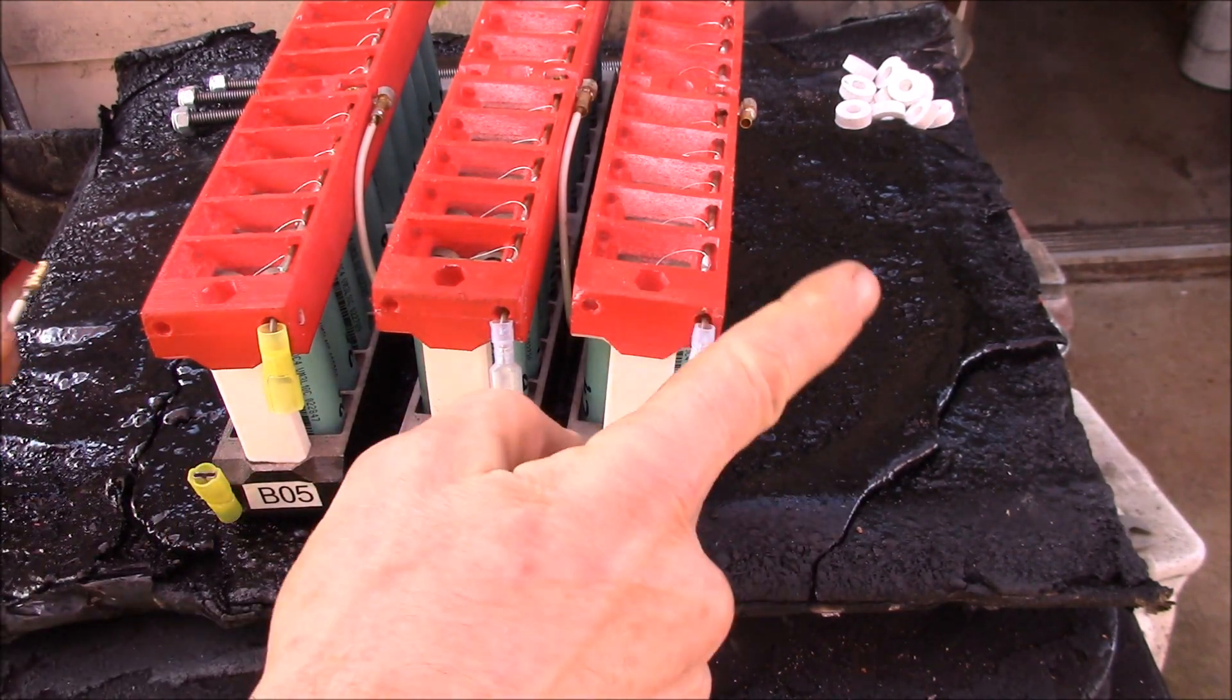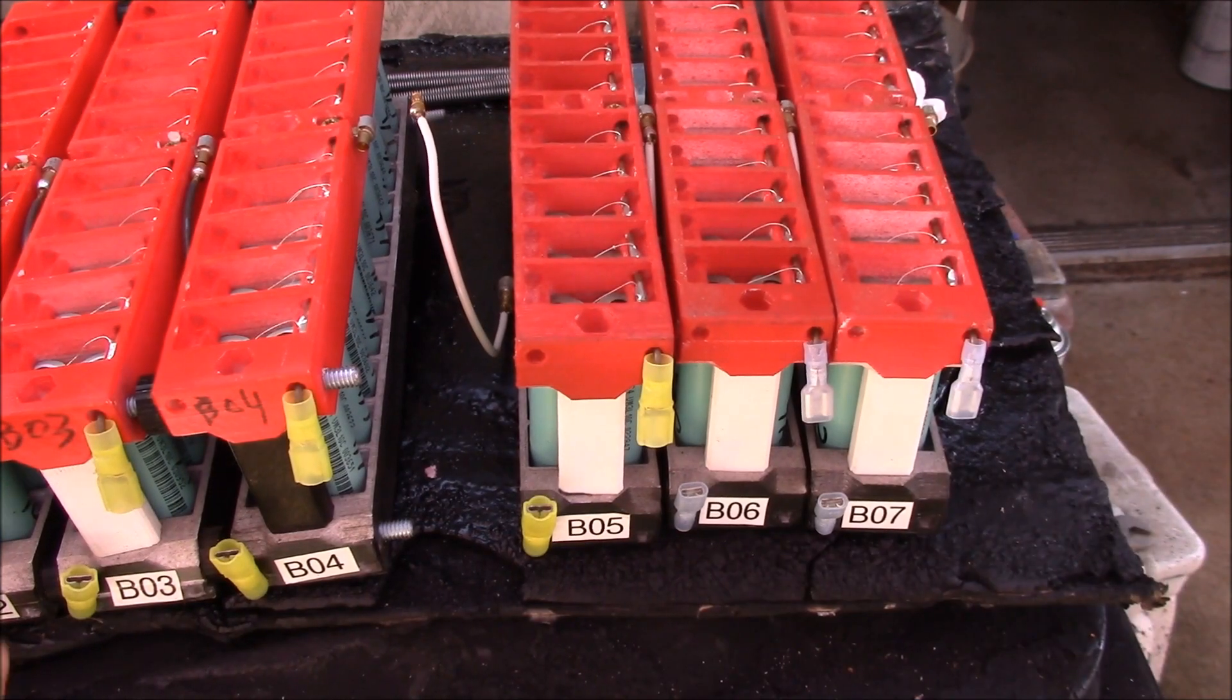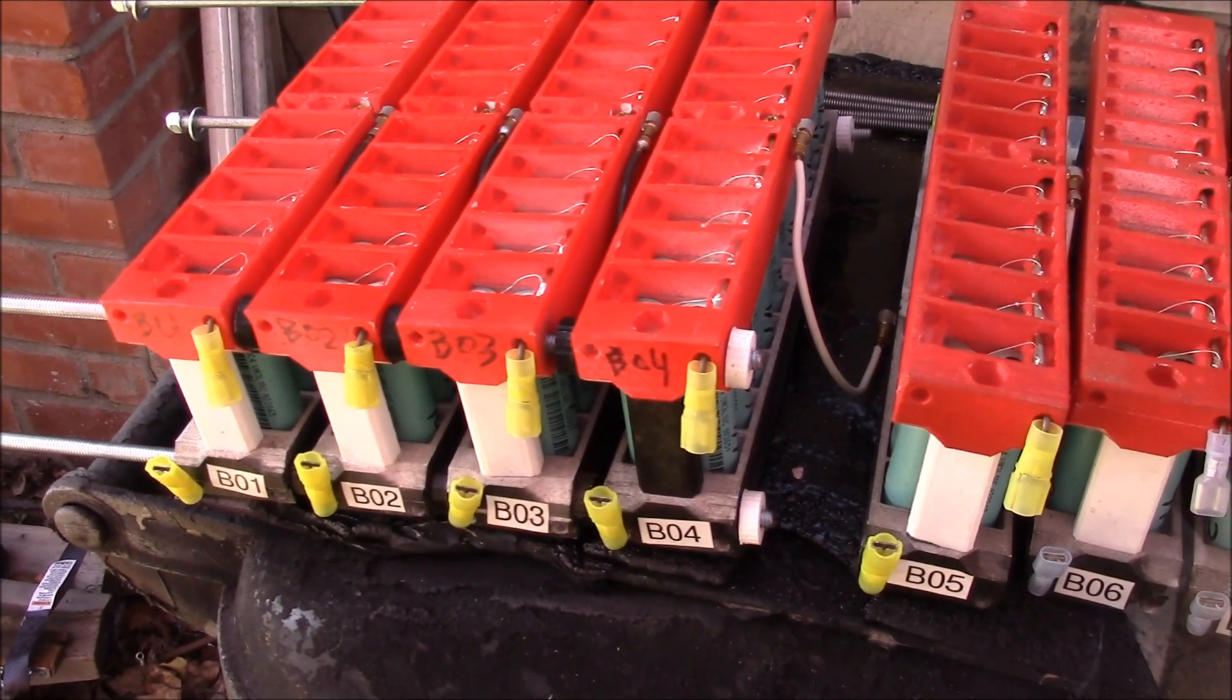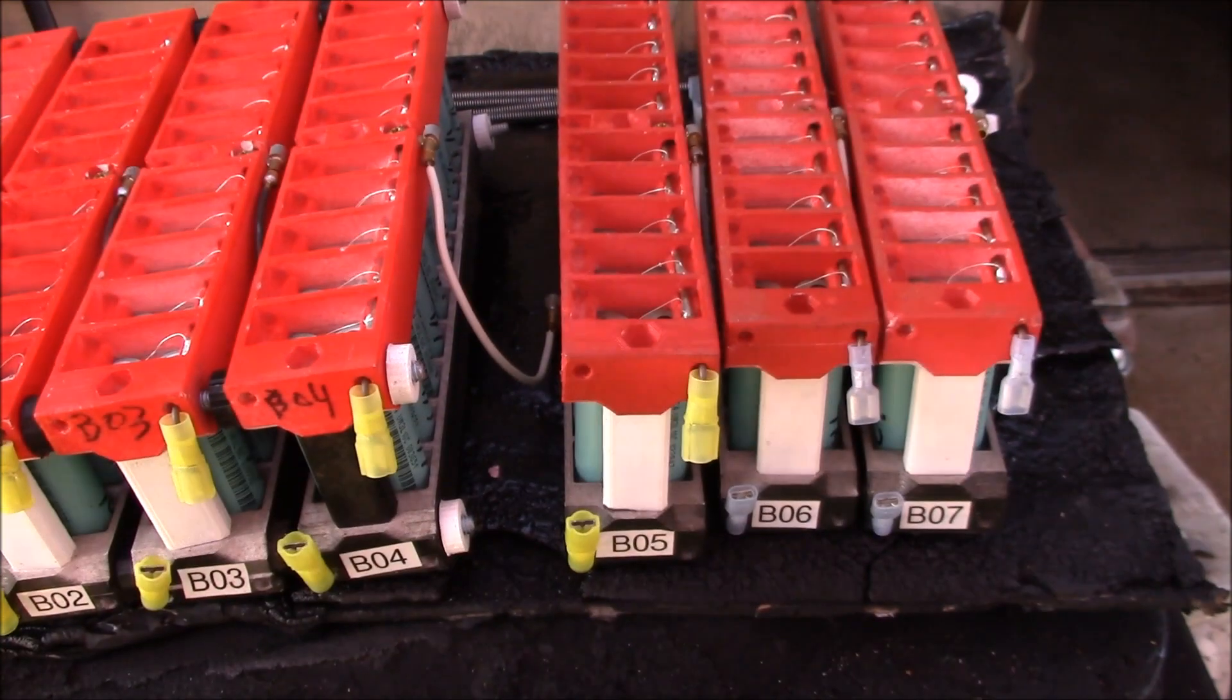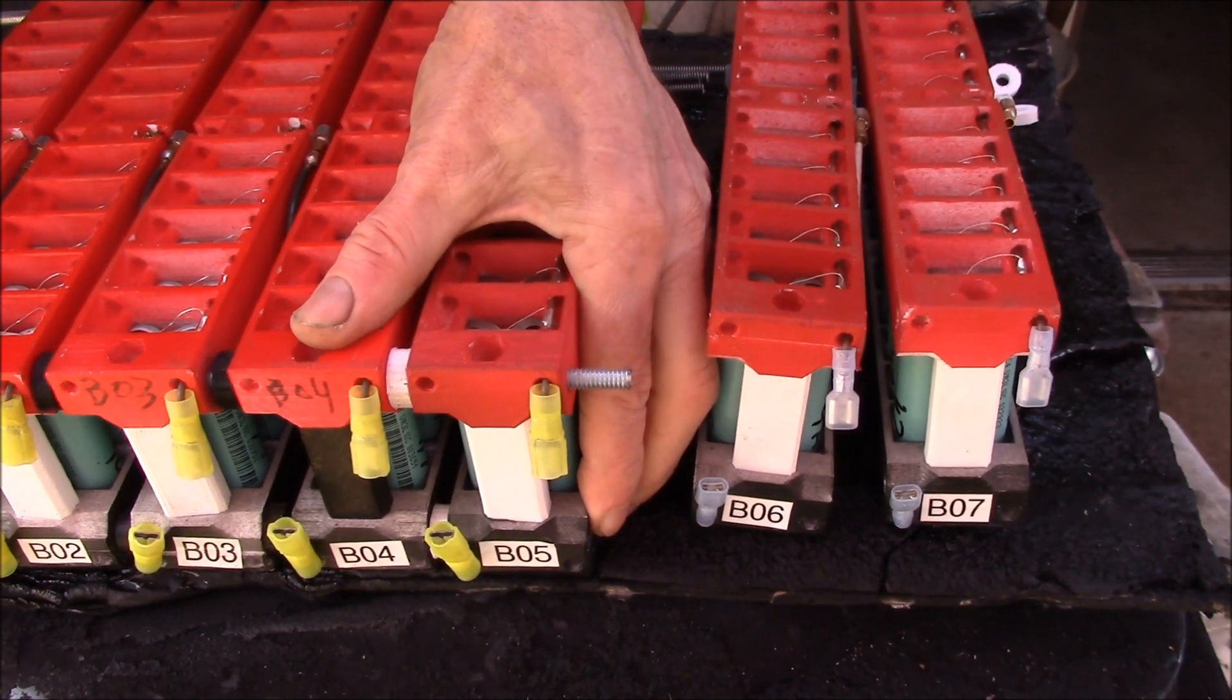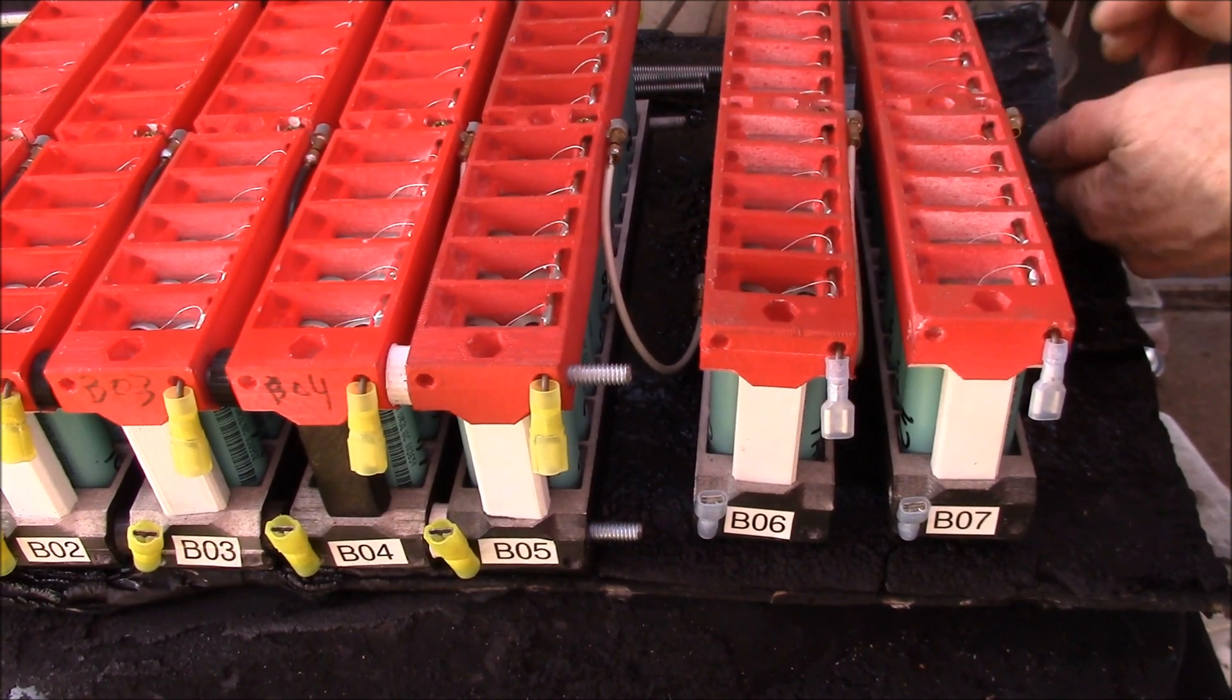And now we have to move the jumper from that end over to this end because we're connecting packs four and five here. There we go, one, two, three, four, five, six, seven. So there we go, we've got the four modules and then we're going to add the fifth one here. It's a hole started, so now we've got that on there, the next four spacers.